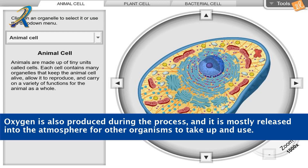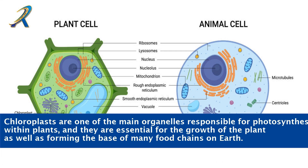Oxygen is also produced during the process and it is mostly released into the atmosphere for other organisms to take up and use. Chloroplasts are one of the main organelles responsible for photosynthesis within plants, and they are essential for the growth of the plant as well as forming the base of many food chains on earth.